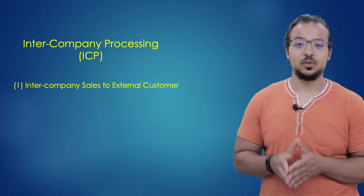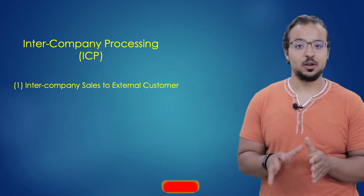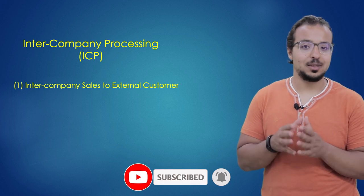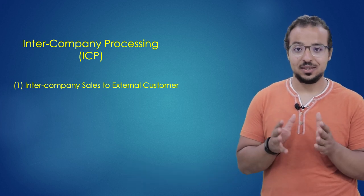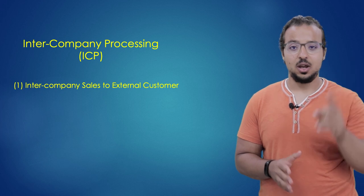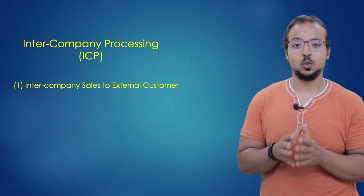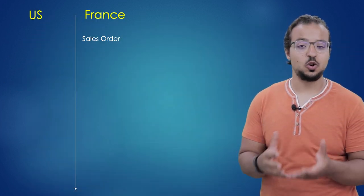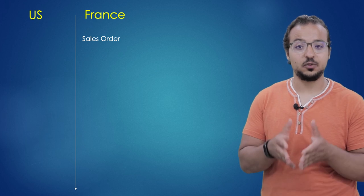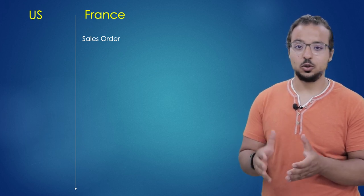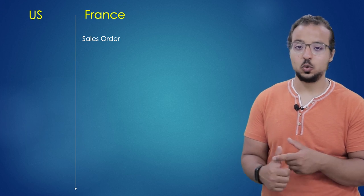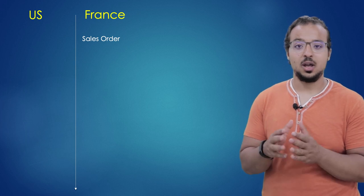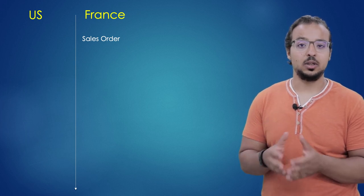Now let's look into the steps of this process. You should already be familiar with the standard order-to-cash or sales order processing, which I explained in another video — I'll leave a link here and recommend you watch it before continuing. This ICP process will start with the creation of a sales order in our company in France to the external customer. This sales order will include details such as who the customer is, what product we are selling, and the different agreements like payment terms, shipping terms, and so on.